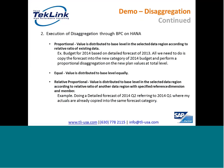The second option was equal. As the name suggests, it allows distributing the plan values to base-level equally. The third option was relative proportional. It involves the value being distributed to base-level in the selected data region according to the relative ratio of another data region with a specified reference dimension and member. Currently, relative proportional disaggregation is limited to only one reference dimension.